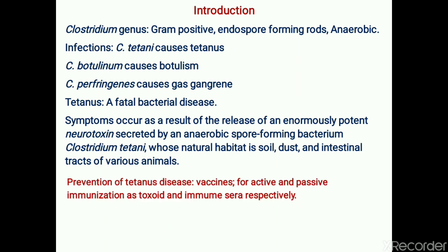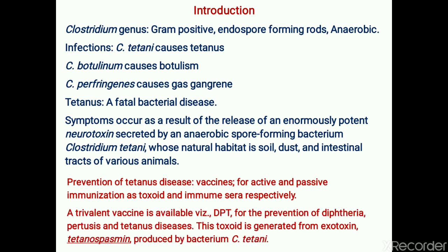The prevention methods for tetanus disease are through active and passive immunization. Vaccines are available: for active immunization it is toxoid, and for passive immunization it is immunoserum. A trivalent vaccine called DPT — standing for Diphtheria, Pertussis, Tetanus — is available and is responsible for prevention of these three diseases.